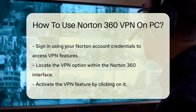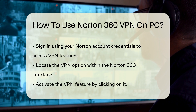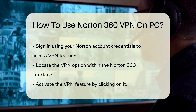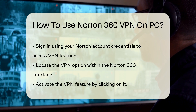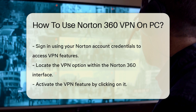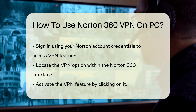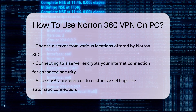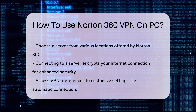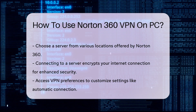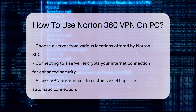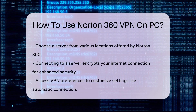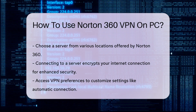Once you locate the VPN feature, click on it to activate the service. You will see an option to connect to a server. Norton 360 offers various server locations to choose from, allowing you to select one based on your needs. Connecting to a server will encrypt your internet connection, making it more secure.